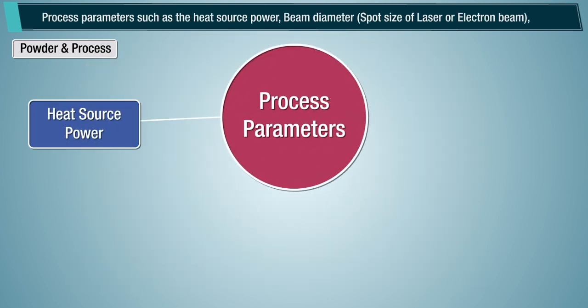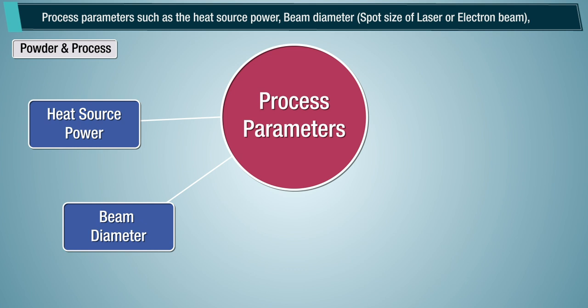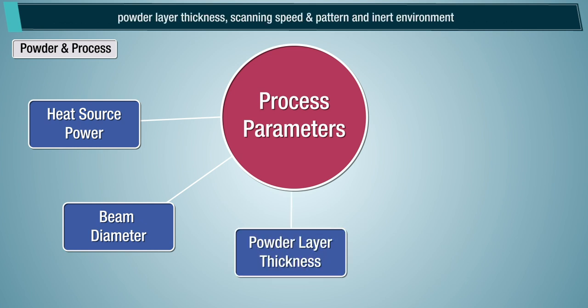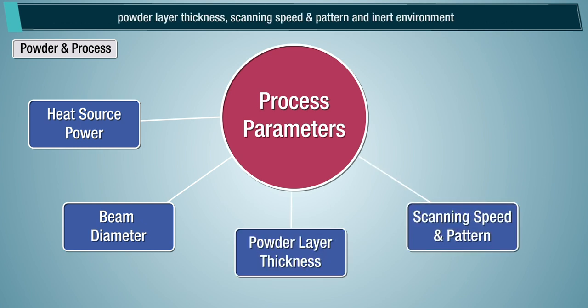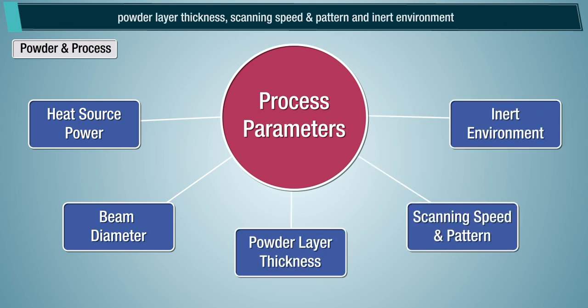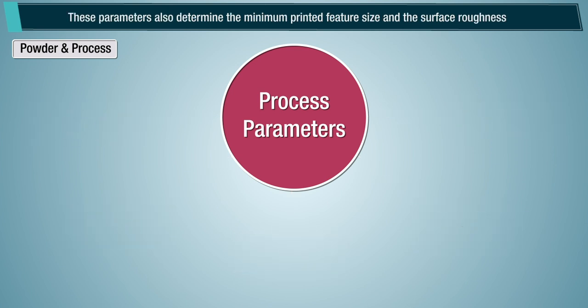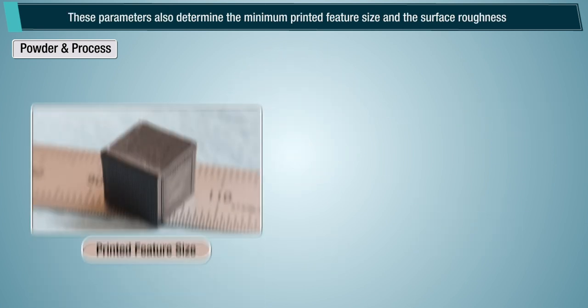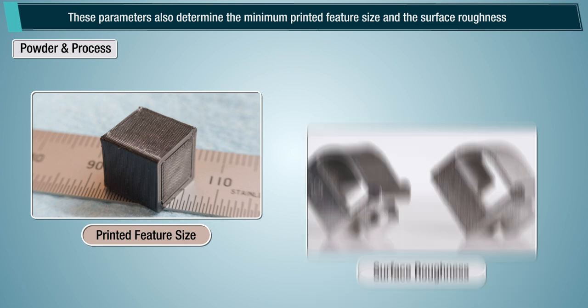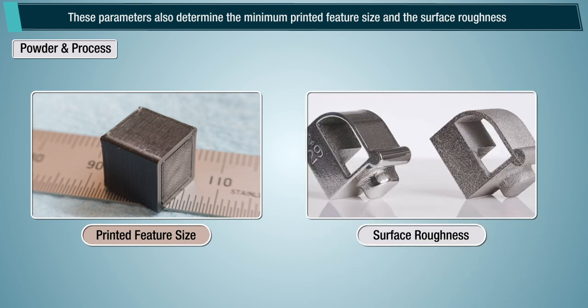Process parameters such as the heat source power, beam diameter, spot size of laser or electron beam, powder layer thickness, scanning speed and pattern, and inert environment play a critical role in the final quality of the printed part. These parameters also determine the minimum printed feature size and the surface roughness.